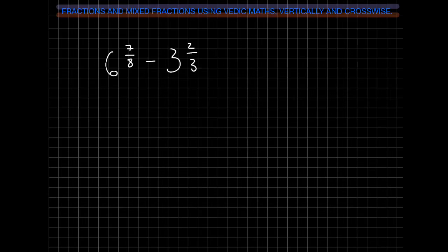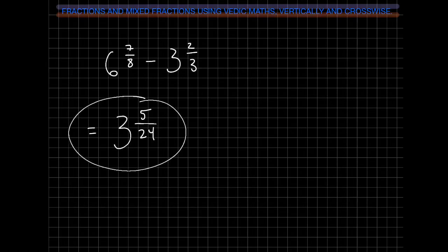Subtracting mixed fractions — same kind of thing. We start with the whole numbers: 6 minus 3 gives us a positive 3. Then vertically and crosswise with the fractions: 7 times 3 minus 2 times 8. So 21 minus 16 gives us a positive 5. And then 8 times 3 is 24. So our final answer is 3 and 5 twenty-fourths.